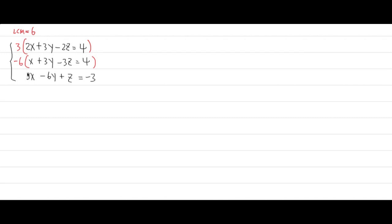For the third equation, 3 times 2 is 6, so I multiply by 2. As you can see, I'm going to produce 6x, negative 6x, and then positive 6x. The signs should alternate — it's going to be easier this way. Trust me.